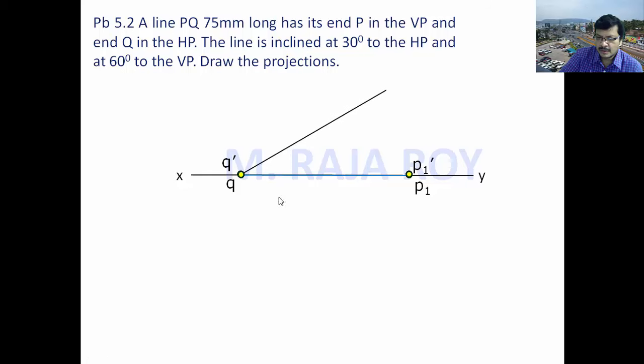Then the next step is keep the inclination with respect to HP that is 30 degrees. Draw a 30 degree line and take Q' as center, Q' P1' as radius. Draw an arc. This intersection point is P2'.